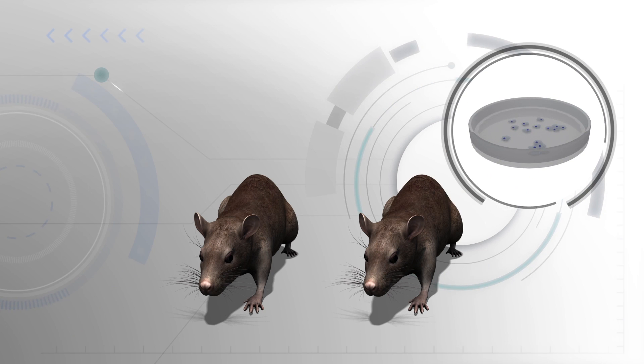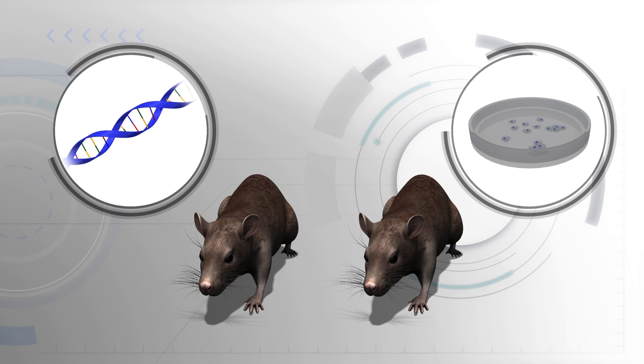the researchers used cells called haploid embryonic stem cells, which contained half of the usual number of chromosomes from one mouse and took DNA from another mouse.